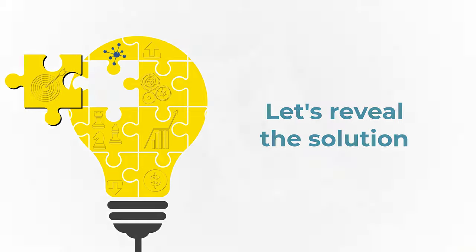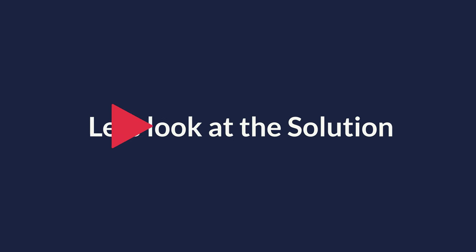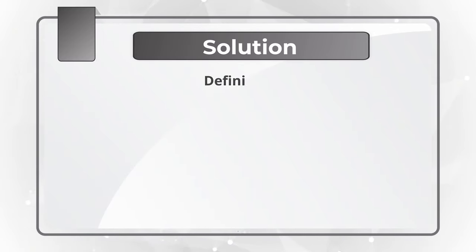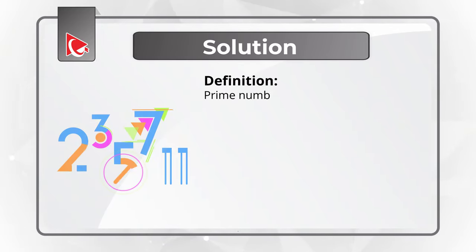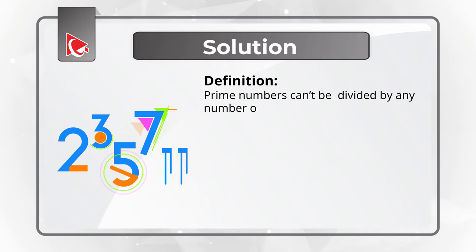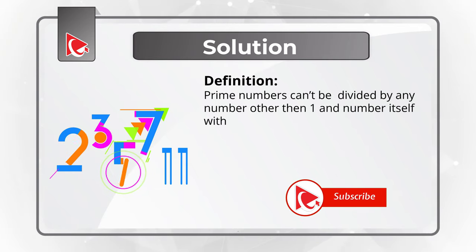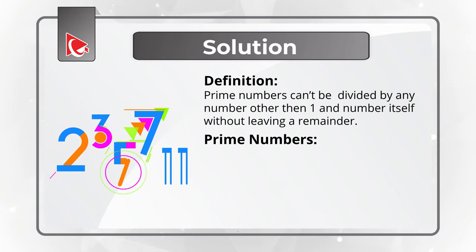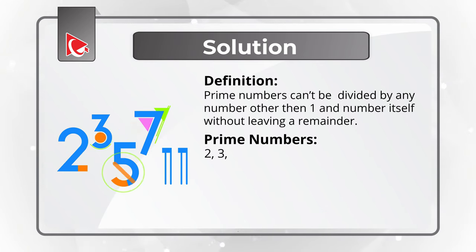Did you solve it? Let's move forward and get to the correct solution together. To solve this challenge, let's start with the definition of a prime number. Prime numbers cannot be divided by any number other than 1 and the number itself without leaving a remainder. Some examples of prime numbers would be 2, 3, 5, 7, 11, and you can continue the chain.